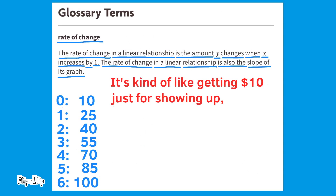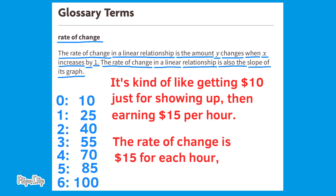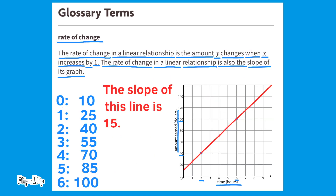It's kind of like getting $10 just for showing up, then earning $15 per hour. The rate of change for this graph is $15 an hour, or 15 to 1 — the ratio of 15 to 1, represented as 15 over 1, or 15 divided by 1, which equals 15. So the slope of this line is 15.